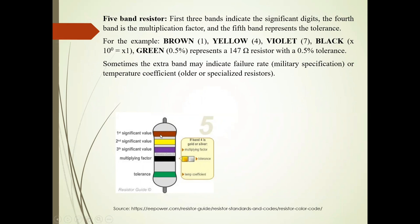So first is brown. So it indicates 1 value. Yellow indicates 4 value. Violet indicates 7. Black means multiplier 10 raise to 0. Green indicates 0.5%. So represents 147 ohm resistor. Its value is 147. And tolerance 0.5%.